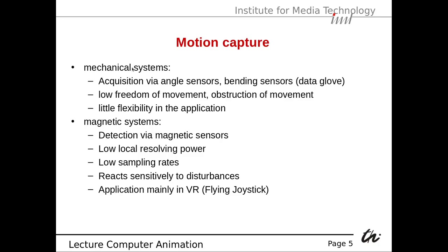Mechanical systems use sensors attached to an actor, for instance on the arm and legs, which measure angles and so on. Acquisition is done by angle sensors and bending sensors, for instance a data glove. There is low freedom of movement because those sensors can obstruct the movement, and there is also little flexibility in the application.